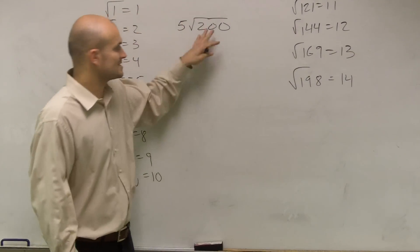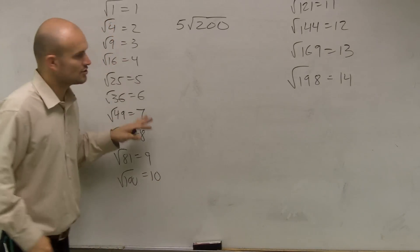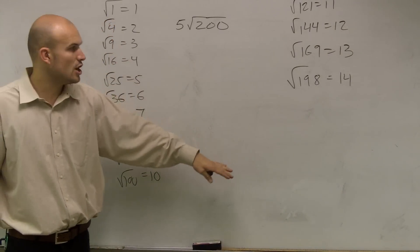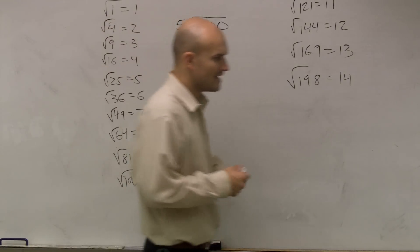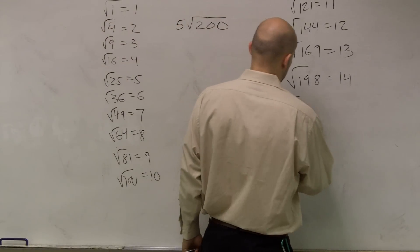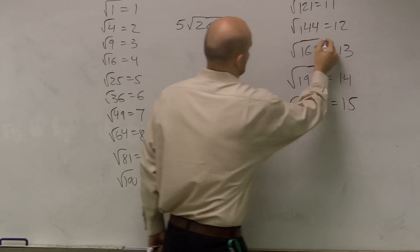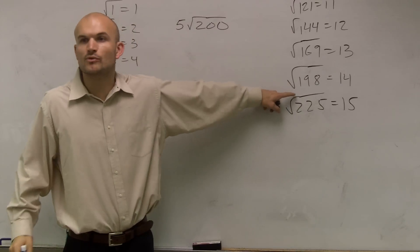So the way that I'm going to teach you how to simplify this, do you guys see square root of 200 up there? Can I write that as an integer? No, right? And 15 is 225. So 200 is going to be somewhere in there, right?